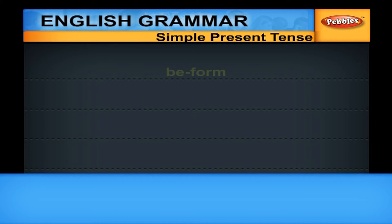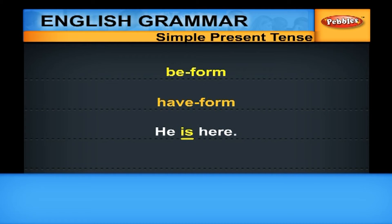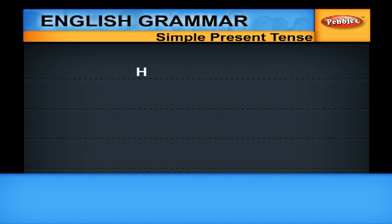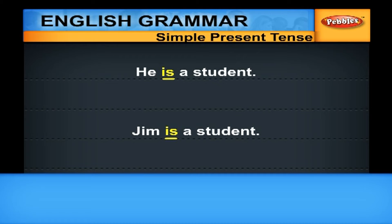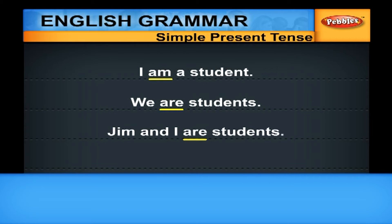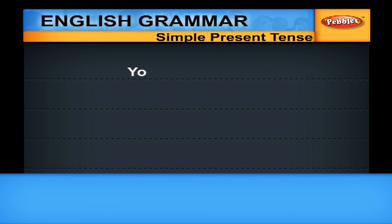We can also use the BE form and HAVE form as a main verb for simple present. You can say HE IS HERE, or TOM IS HERE, HE IS A TEACHER, or ANN IS HERE, HE IS A STUDENT, or JIM IS A STUDENT. We are using the auxiliary IS as a main verb.